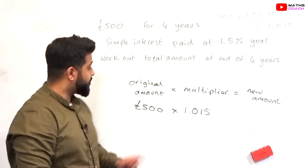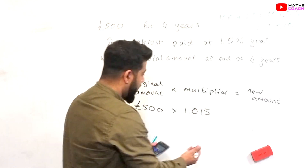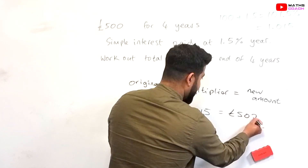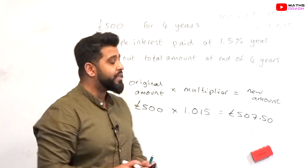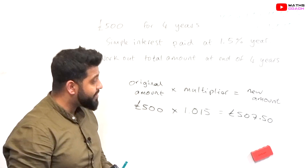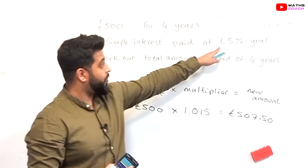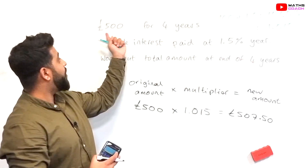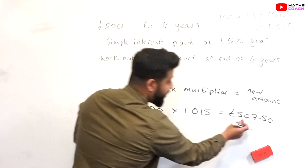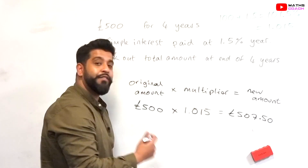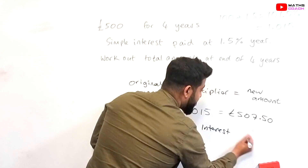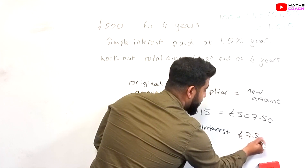All that's left to do is enter this into your calculator: £500 times 1.015 gives us £507.50. Since this is a simple interest question, we've been paid 1.5% on our original £500, so the interest amount after one year is £7.50.